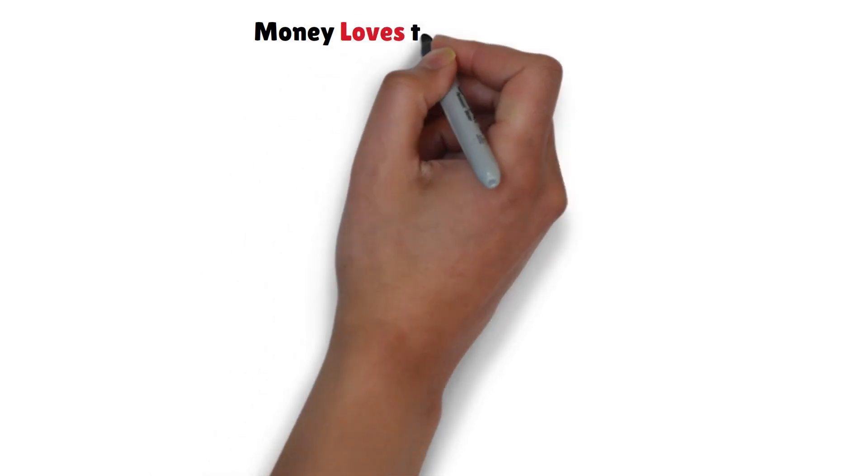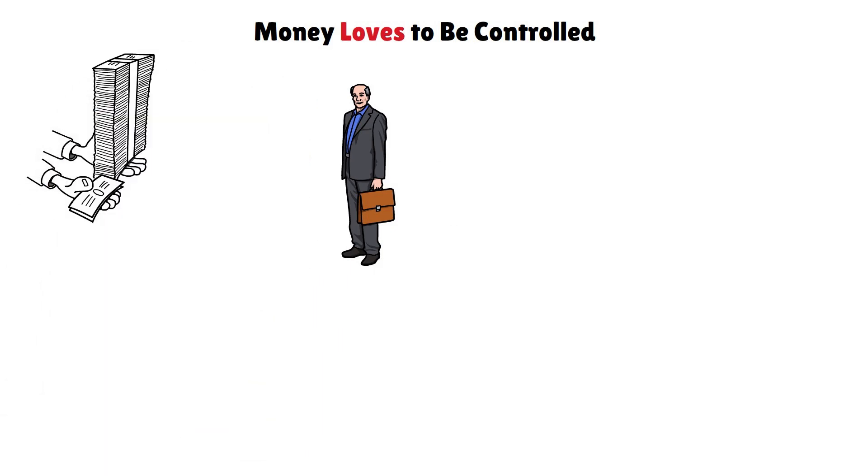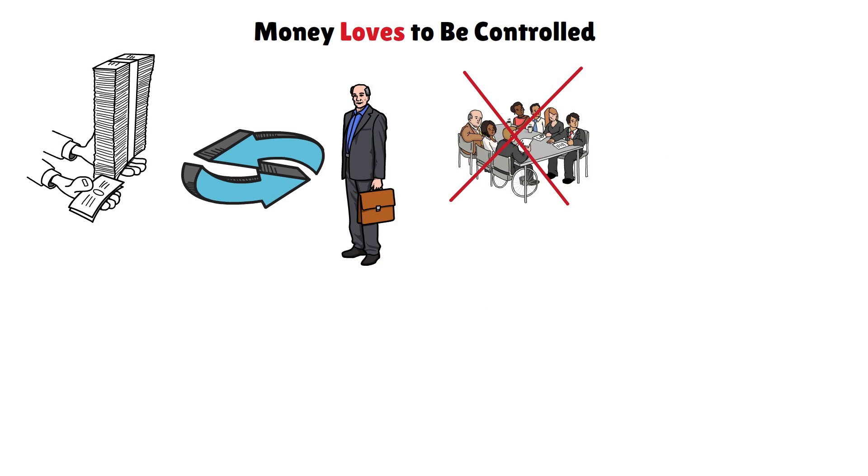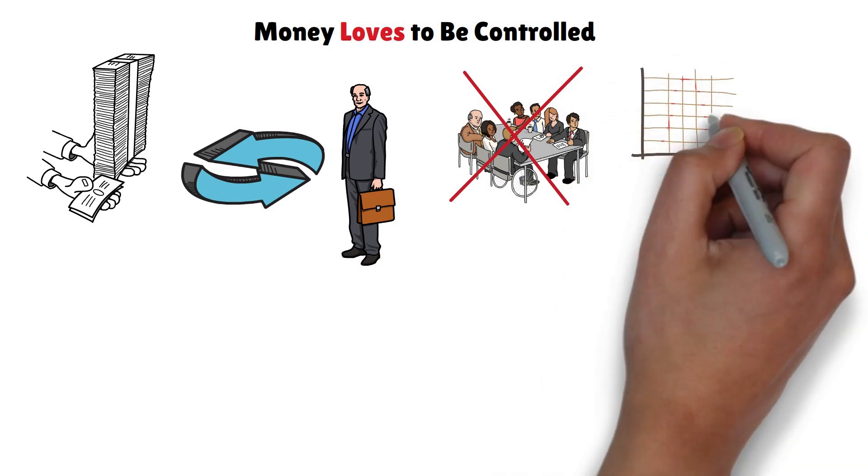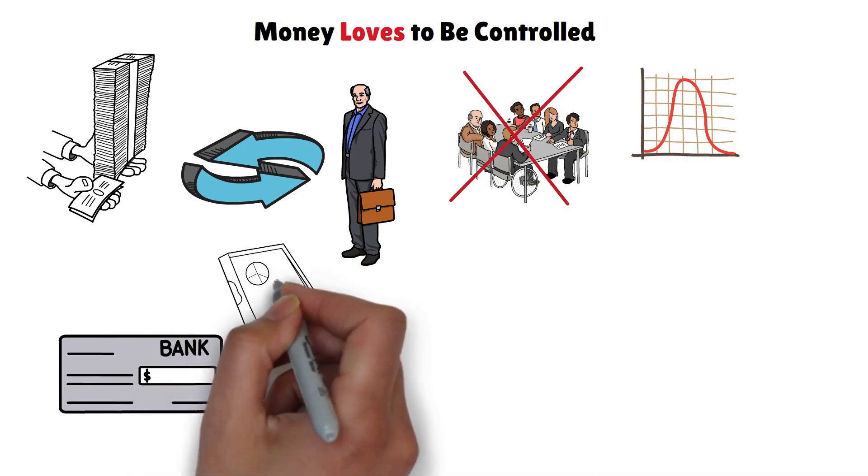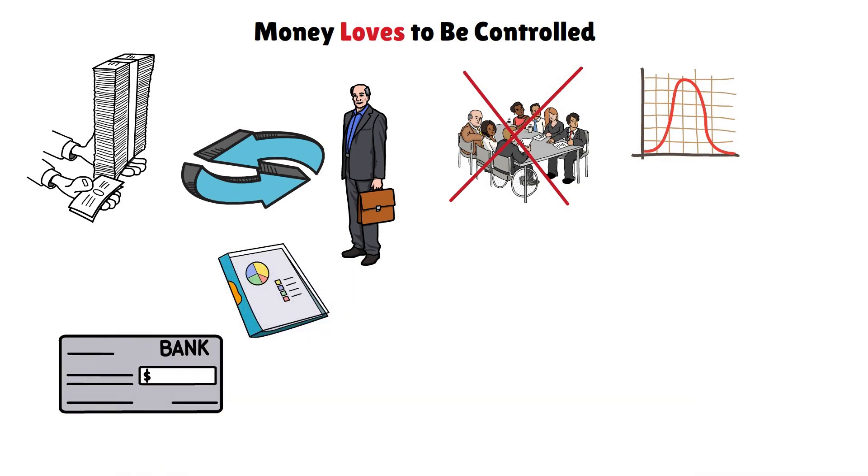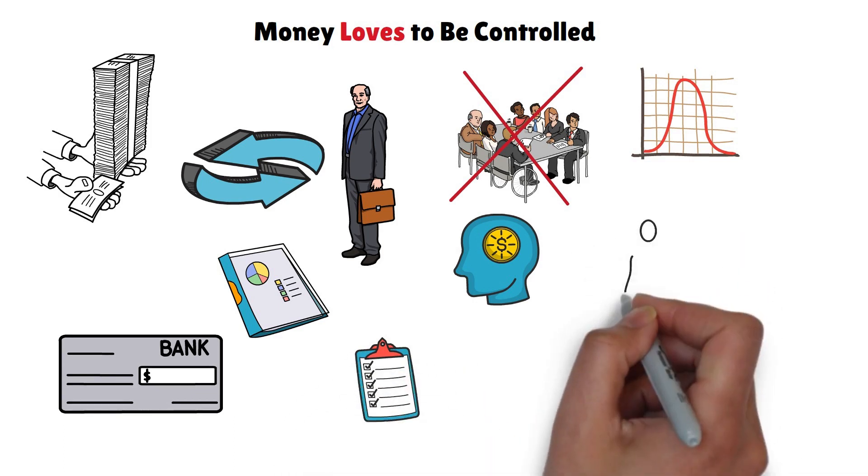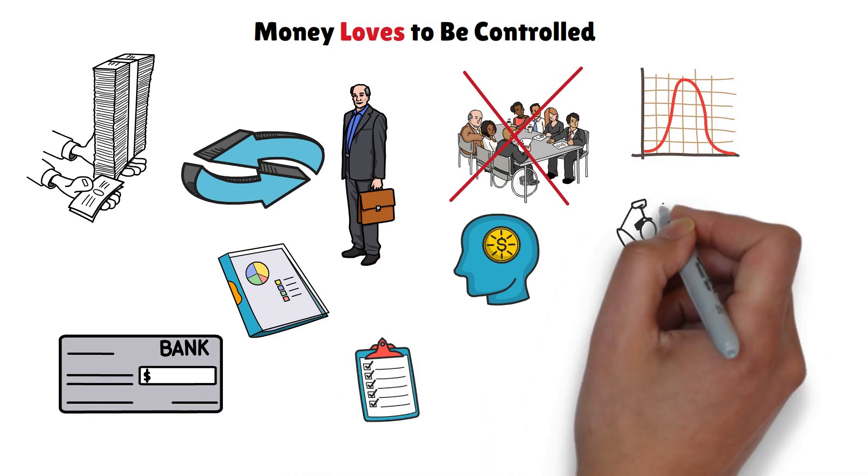Rule 10: Money loves to be controlled. It's often said that when you don't control your money, your money controls you. Without proper financial management, you risk falling into debt and losing control of your financial future. To maintain control, it's crucial to keep track of the amount of money in each of your bank accounts and understand your regular expenses. Without this understanding, money can dictate your spending habits and potentially lead you into an undesirable financial situation.